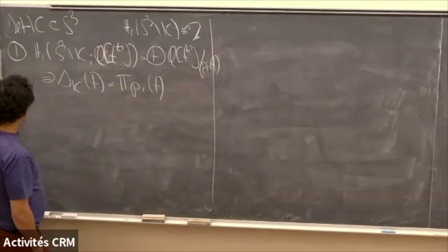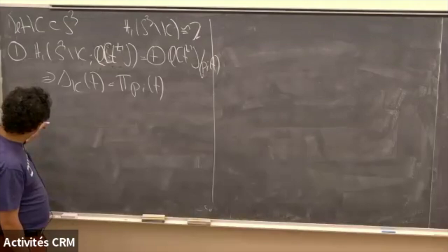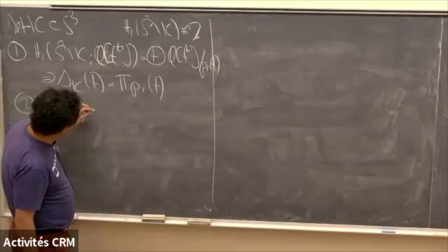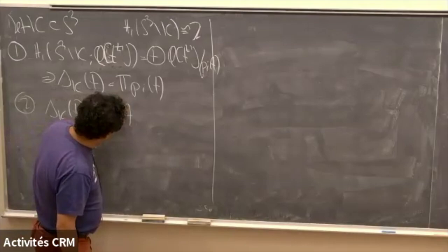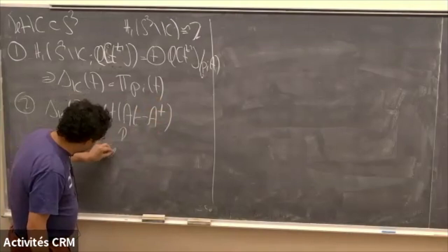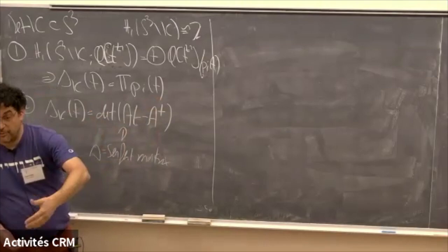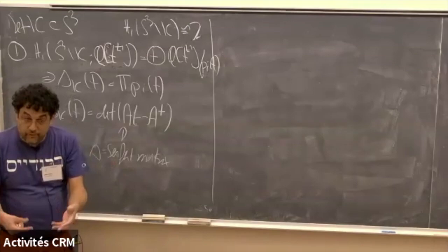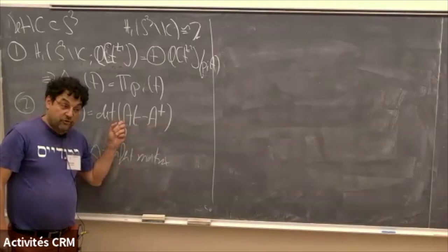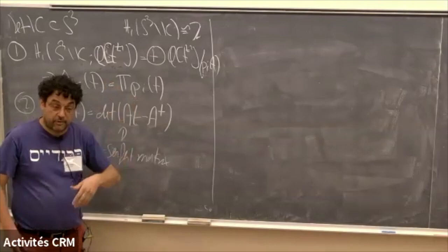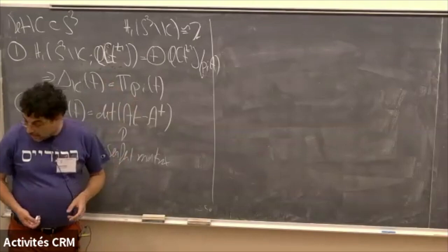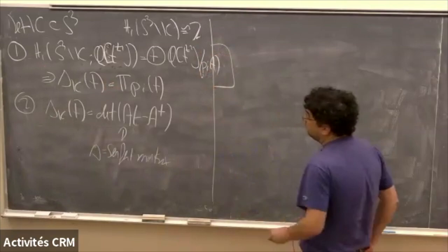That's not the most standard definition, but in a way it's the shortest: look at the infinite cyclic covering, view its homology as a module over ℚ[t, t⁻¹], apply the structure theorem, and take the product. A second, more common definition uses the Seifert matrix: the Alexander polynomial is det(tA - Aᵀ) where A is a Seifert matrix. Every knot bounds a Seifert surface, and the size of A is 2g where g is the genus of the Seifert surface.